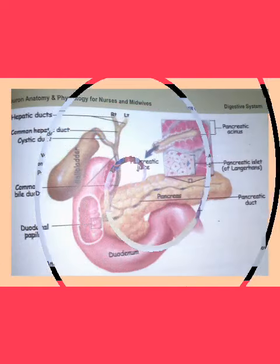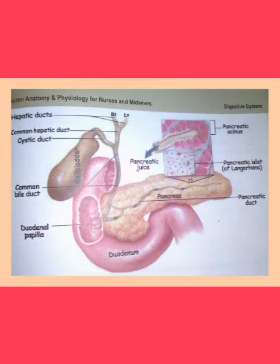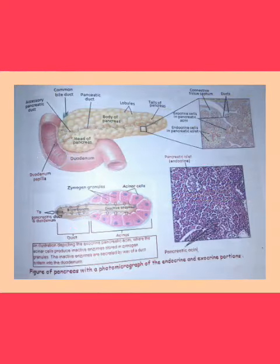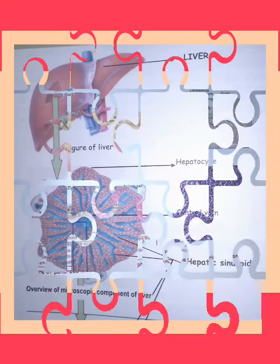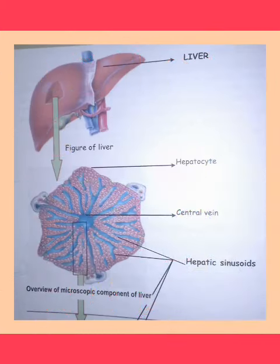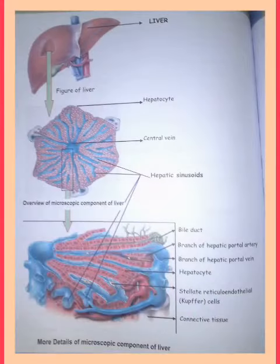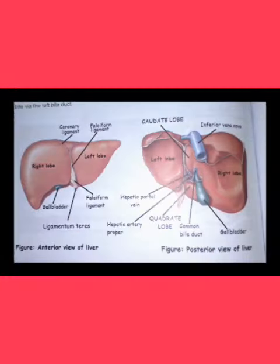Two, accessory digestive or GI organs are: the teeth, tongue, salivary glands (three pairs), liver, gallbladder, and pancreas.